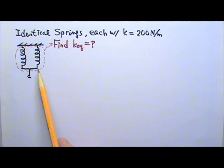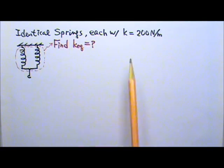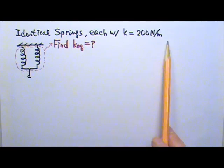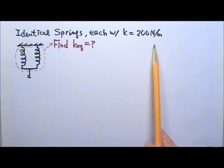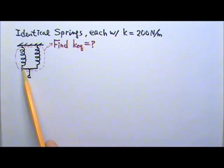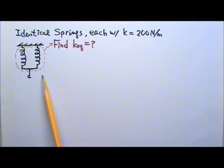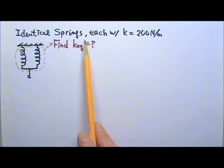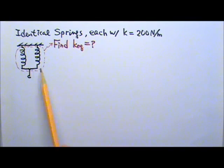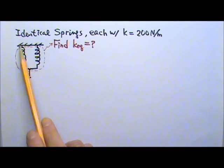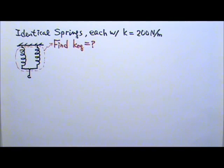I have two identical springs, each with a spring constant of 200 N/m. These two springs are connected together in parallel. What we want to find is the equivalent spring constant of the combination of these two springs.